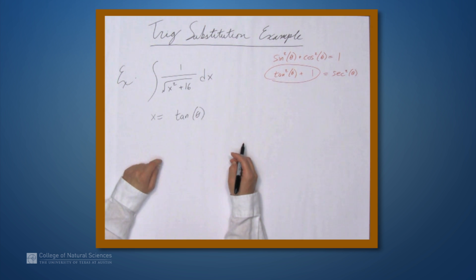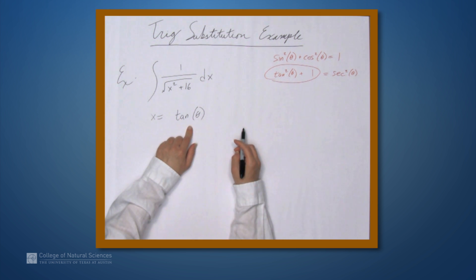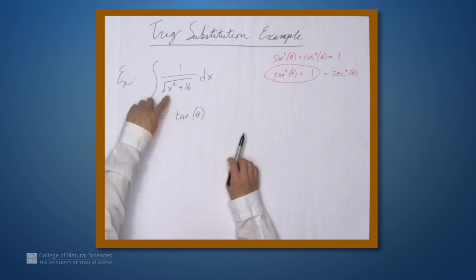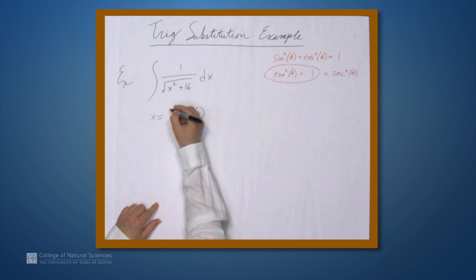But it'll simplify in the end. Now, we don't just want this to be tangent theta because we want the expression under here to involve something like tangent squared plus 1. So this thing squared had better give us a 16 that we can factor out with this 16. So we want x to be 4 times tangent theta. So in this case, dx is 4 secant squared theta d theta.